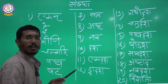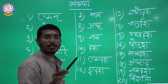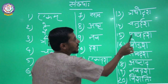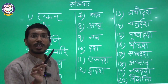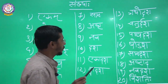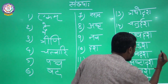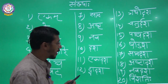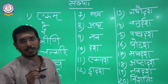Ekadash — 11, Dvadash — 12, Trayodash — 13, Chathurdash — 14, Panchadash — 15, Shodash — 16, Saptadash — 17, Ashtadash — 18, Navadash — 19, Vimshatihi — 20. Ok, Children, Thank You.